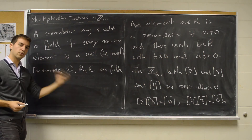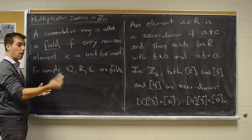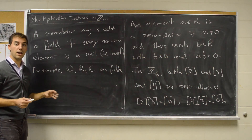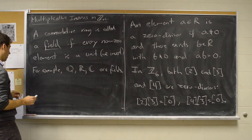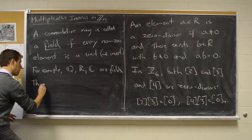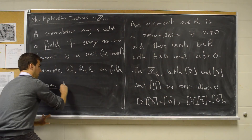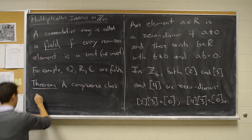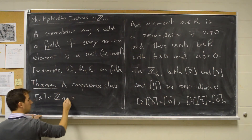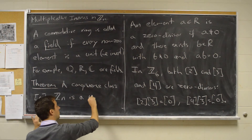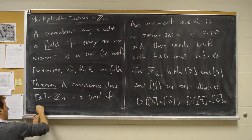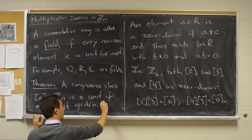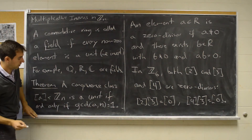In the case of congruence classes modulo n, elements do fall into one class or the other. The theorem is: a congruence class A in Zn is a unit if and only if the greatest common divisor of A and N is 1. This ties into all we've been doing with the Euclidean algorithm.